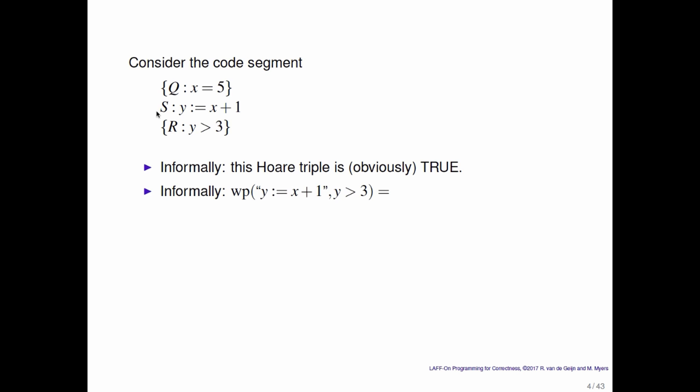You could also informally compute the weakest precondition, which informally we know is x greater than 2. Why? Because x has to be greater than 2 if you want y, which is 1 greater, to be greater than 3.